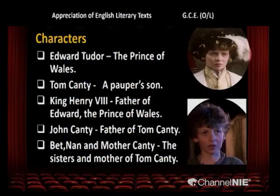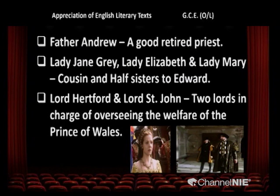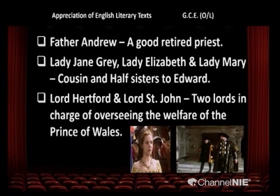Now we are going to discuss the characters in the novel. Edward Tudor, the Prince of Wales, and Tom Canty, a pauper's son. King Henry VIII is the father of Edward, the Prince of Wales. John Canty is the father of Tom Canty. Beth and Nan are twin sisters of Tom Canty, and Mother Canty is his mother. Father Andrew is a good retired priest. Lady Jane Grey is the cousin of the prince, and Lady Elizabeth and Lady Mary are half-sisters to Edward. Lord Hertford and Lord St. John are two lords in charge of overseeing the welfare of the Prince of Wales.